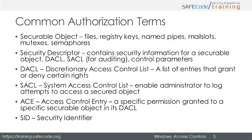Security descriptor: a security descriptor contains security information for a securable object. DACL, or the Discretionary Access Control List, is a list of entries that grant or deny certain rights. SACL, or the System Access Control List, is a list that gives an administrator the ability to log attempted access to a secured object. ACE, or an access control entry, is a specific permission granted to a security object in its discretionary access control list. And SID, or the Security Identifier, is a unique identifier associated with a user, user group, or other security cohort.